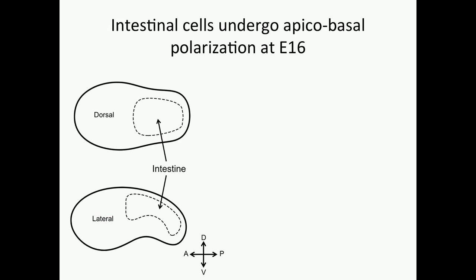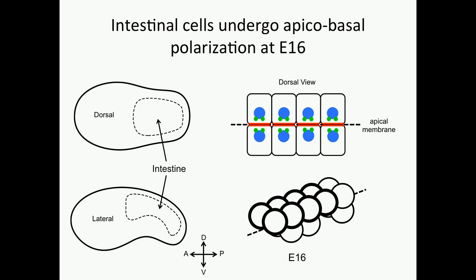Non-centrosomal microtubule organizing centers are found in many tissues in C. elegans. The embryonic intestine is particularly useful for studying this. I'm showing here dorsal and lateral views of the embryo, and you can see in the dotted line where the intestine sits with relation to the embryo. The intestinal progenitor undergoes a rapid series of divisions to give rise to this E16 or 16-cell stage intestine, at which point the cells undergo an apical-basal polarization, where you see the nuclei and the centrosomes polarized to that apical membrane.